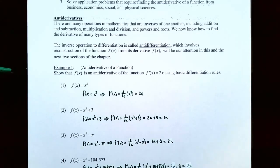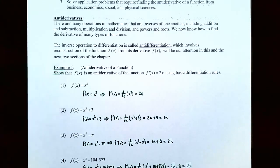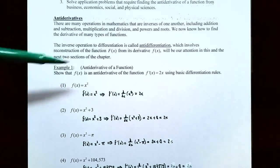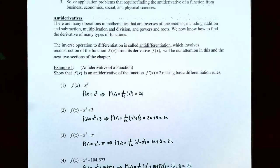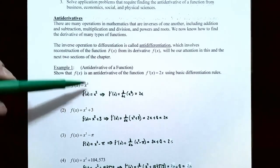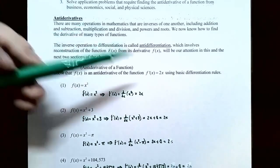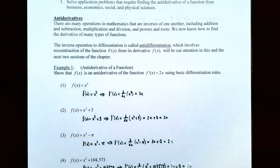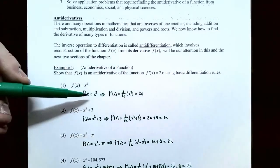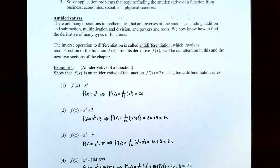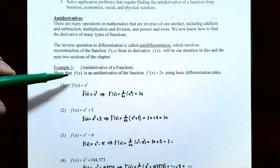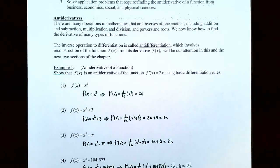So example one, antiderivative of a function. Let's get some practice of what it actually means to be an antiderivative of lowercase f of x. Show that lowercase f of x is an antiderivative of f prime of x equals 2x using the basic differentiation rules. Number one, the function f of x is x squared. You take the derivative of the antiderivative: the derivative of x squared is 2x using the power rule. So f prime of x equals 2x, meaning this f of x is an antiderivative.